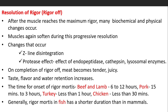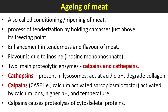Resolution of rigor: After the muscle reaches maximum rigor, many biochemical and physical changes occur and muscles soften again. Changes that occur include Z-line disintegration and the effect of proteases — specifically endopeptidases, cathepsins, and lysosomal enzymes. On completion of rigor, meat becomes tender and juicy, and taste, flavor, and water retention increase. The time for onset of rigor mortis: beef and lamb, 6 to 12 hours; pork, 15 minutes to 3 hours; turkey, less than 1 hour; chicken, less than 30 minutes. Generally, rigor mortis in fish has a shorter duration than in mammals.